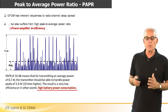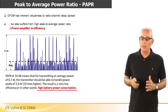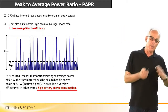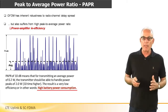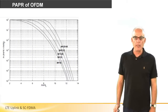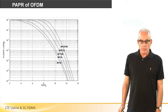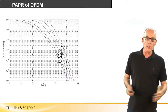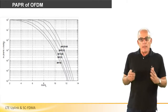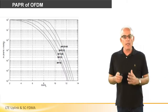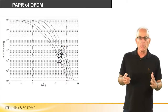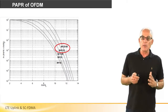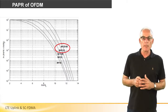This is regarded as a significant disadvantage, especially in mobile communication technology where at least part of the units are powered by battery. The graph showing the peak-to-average power ratio of OFDM confirms that, depending on the number of subcarriers, for anything between 500 to 2,000 subcarriers the typical value is about 10 dB peak-to-average power ratio.